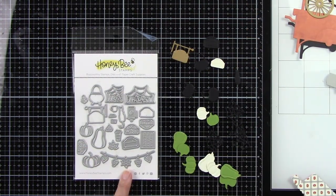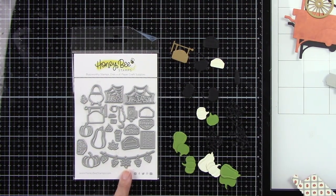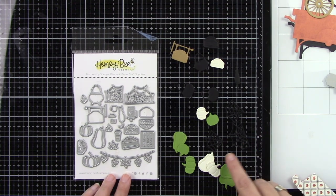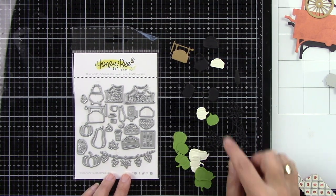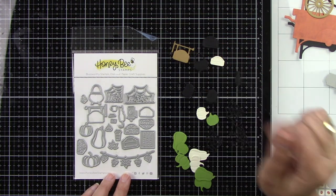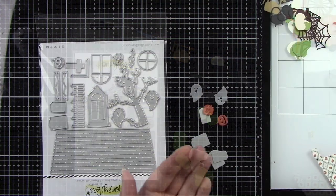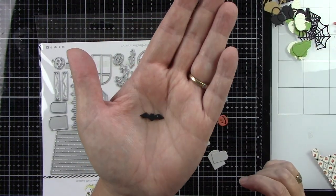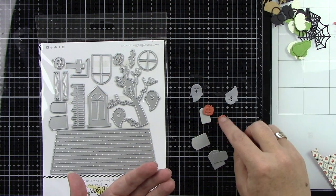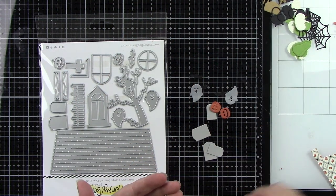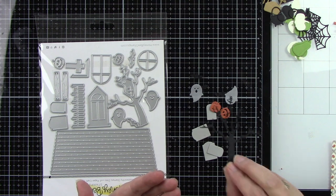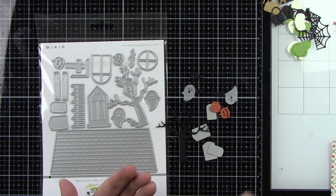Then the next one is the Pumpkin Spice market cart add-on. This is from the new Spooktacular release. I die cut some pumpkins and then a cat, the kettle, and the sign. And then from the Haunted House add-ons is completely different. I die cut some headstones, some jack-o'-lanterns, a tree, some ghosts, and some bats.